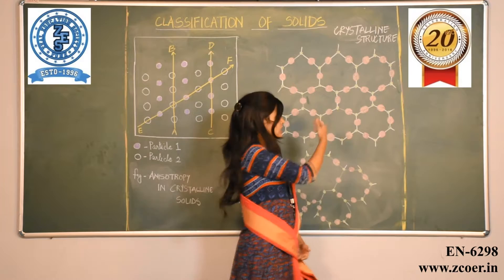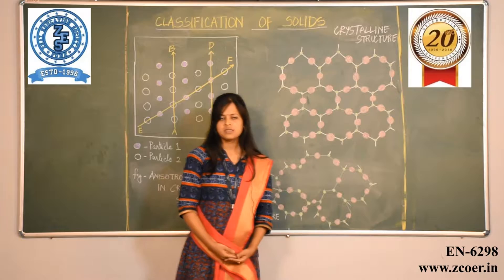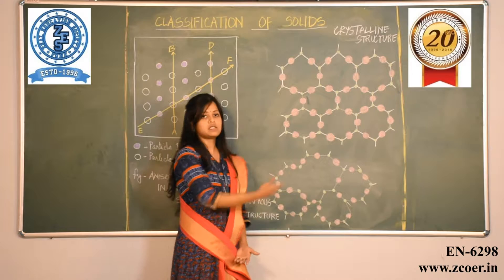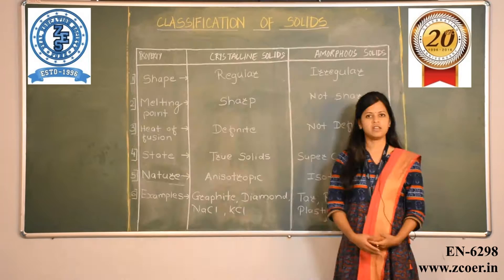Just as crystalline solids have various physical properties, amorphous solids also have various properties such as dielectric constant, electrical conductance, and refractive index. All these physical properties are the same in every direction for amorphous solids. This phenomenon is called isotropy.